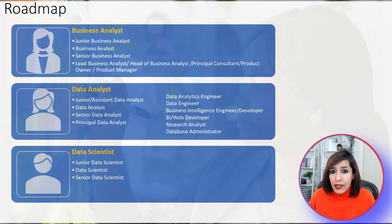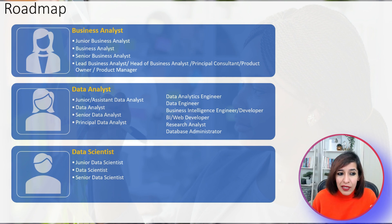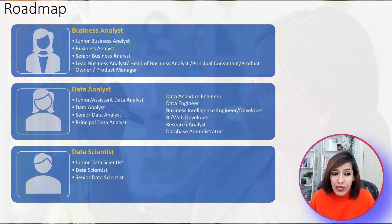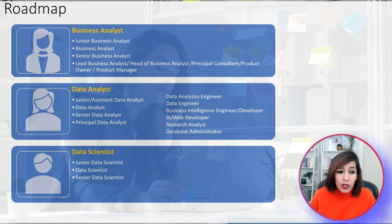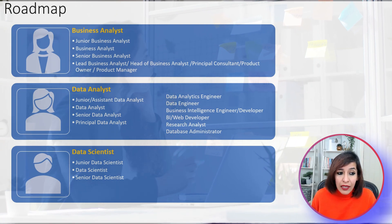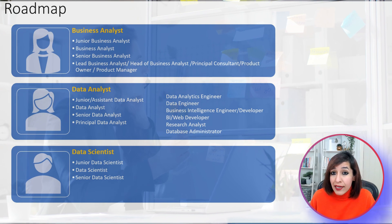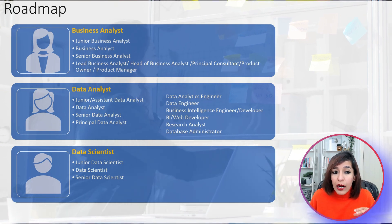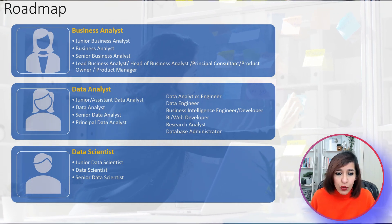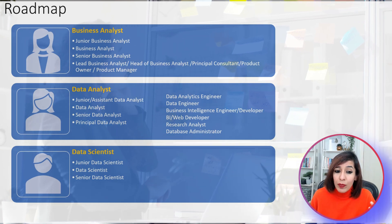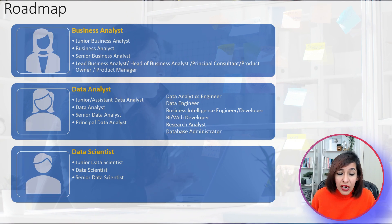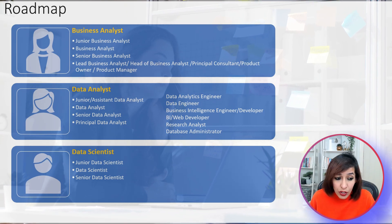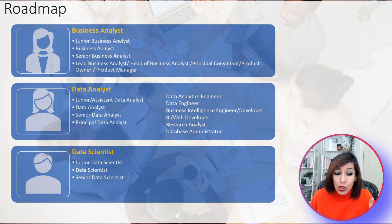For the roadmap: business analysts can start as a junior business analyst — consulting companies do take interns and pay well — then progress to business analyst, senior business analyst, and lead business analyst. Other titles include head of business analysis, principal consultant, product owner, and product manager. For data analysts, start as a junior or assistant data analyst, then data analyst, senior data analyst, and principal data analyst. Related titles include data engineer, data analytics engineer, business intelligence engineer, web analyst, research analyst, and database administrator.